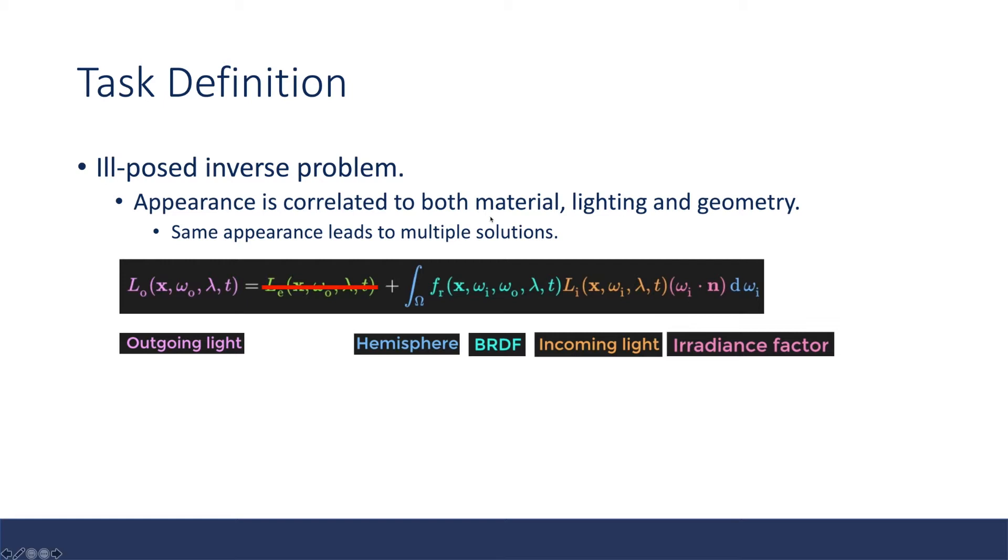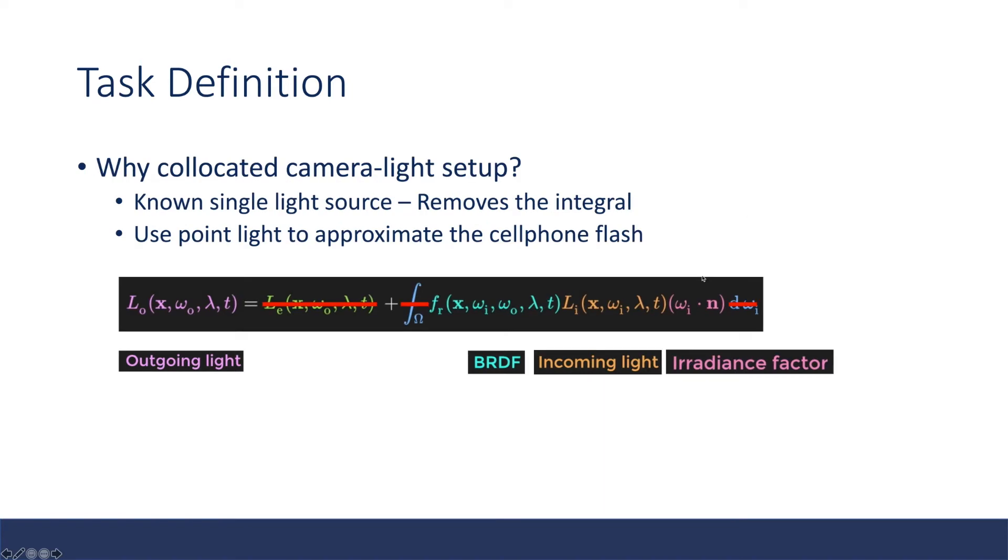Basically the problem when jointly capturing material and geometry is actually an ill-posed inverse problem. Because appearance, as this rendering equation shows, is correlated to both material, lighting, and geometry. So the same appearance may lead to multiple solutions.